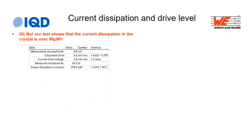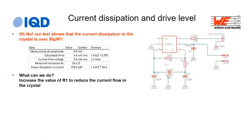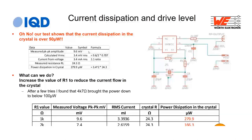The solution is to increase R1, the current limiter. R1 sits in the feedback loop between the amplifier output and the crystal — increasing R1 reduces current flow and therefore reduces power dissipated in the crystal. After experimenting with values, changing R1 to 4k7 reduces the drive level to 64 µW — comfortably below the 100 µW maximum on the datasheet.